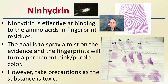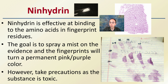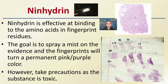Ninhydrin is effective at binding to the amino acids in the fingerprint residues. The goal is to spray a mist on the evidence, and the fingerprints will be turned into a permanent pinkish-purple color fairly quickly. It does require precautions as the substance is toxic, so you want to be careful when utilizing it. But as you can see, it can make prints very easily visible and reveal key characteristics.